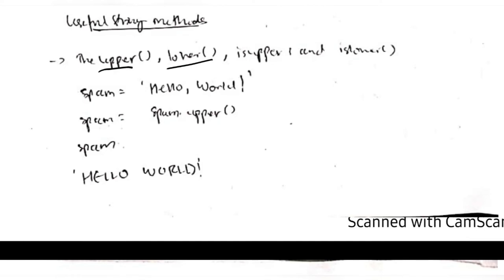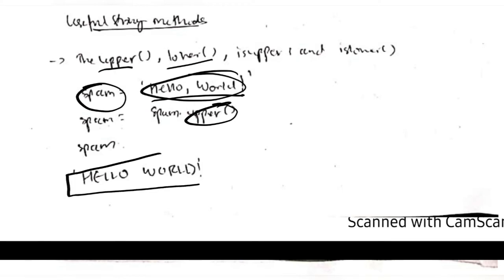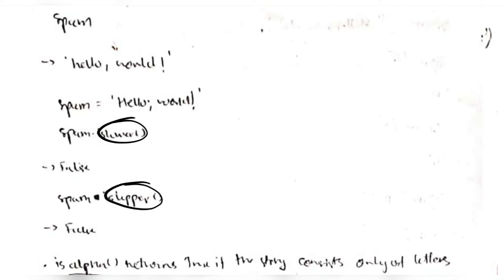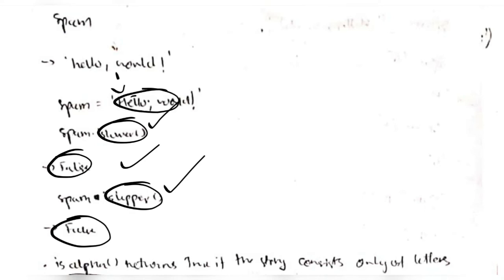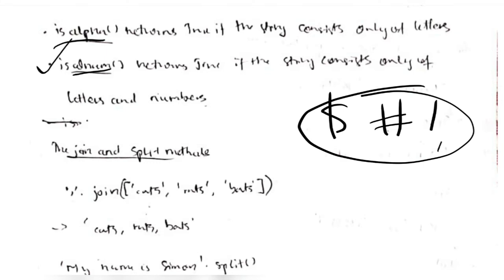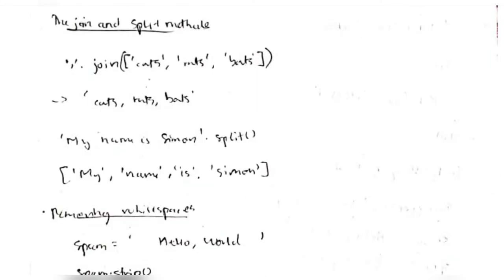To convert case, we use upper() and lower(). spam.upper() converts all letters to uppercase, giving 'HELLO WORLD'. The same can be done with lower(). We can check case with isupper() and islower() — these return True only if every letter is uppercase or lowercase respectively. If the string is mixed case like 'Hello', both isupper() and islower() return False. Similarly, isalpha() checks if the string contains only alphabets, and isalnum() checks if it contains only alphabets and numbers — if special characters like # or ! are present, it returns False.